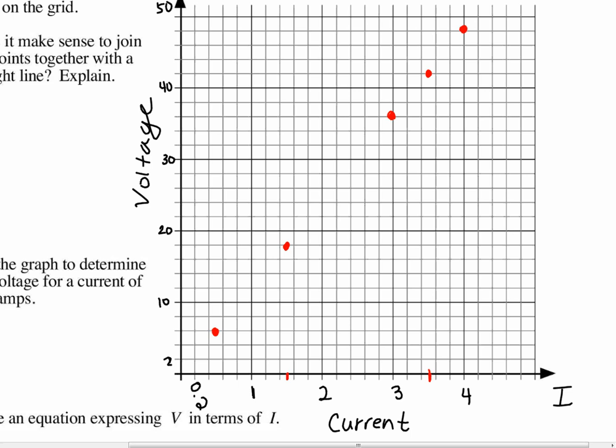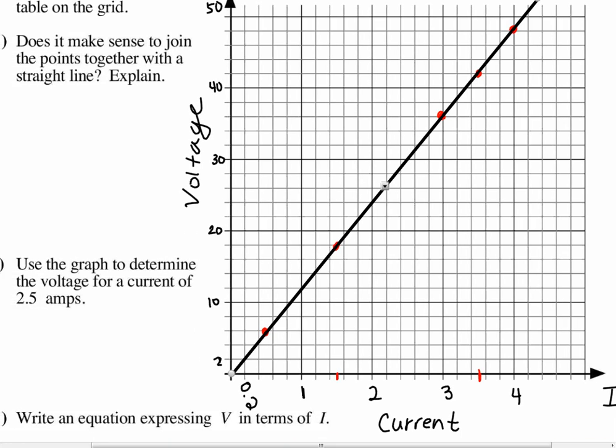So, we would want to connect these. Now, your rulers can make great, or your calculators can make great straight edges, the lids. I do have rulers, but just for this one question, it doesn't make sense to hand them out. We do want to draw a line and connect these points. So, it's from zero, zero, and up. And if you did your points correctly, it should beautifully go through all of them and go through zero, zero. If you're zero current, you're going to have zero voltage.